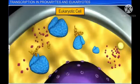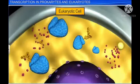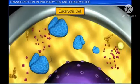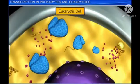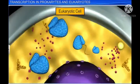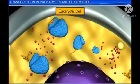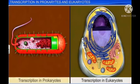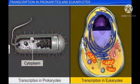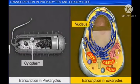The stages of transcription in eukaryotes are similar to that of prokaryotic transcription. However, there are some differences as well. Unlike prokaryotic transcription, which occurs in the cytoplasm, transcription in eukaryotes occurs in the nucleus.